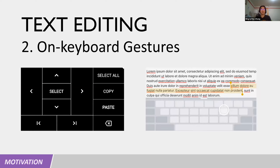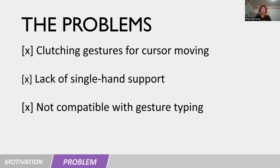Realizing the problems, many soft keyboards offer on-keyboard gestures for editing. For example, the Gboard on the left has control buttons and the iOS keyboard can become a trackpad for cursor control and text selection. In this way, the user doesn't need to leave the keyboard area during typing. Although various solutions for on-keyboard gestures exist, they share three common problems.